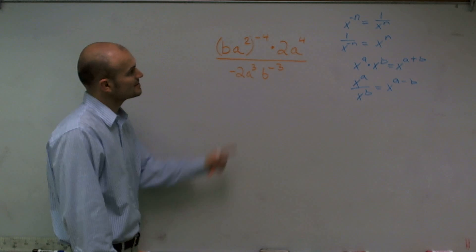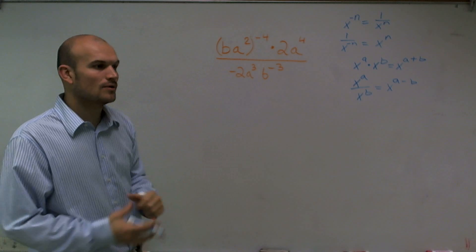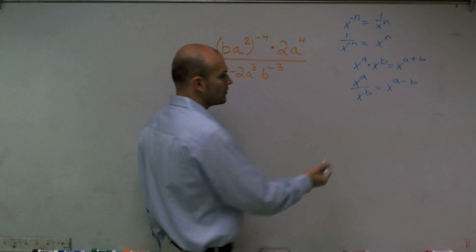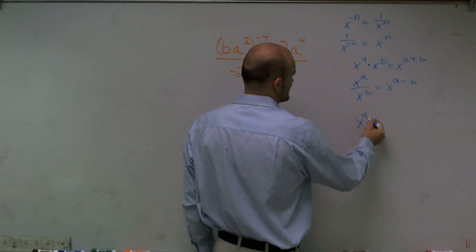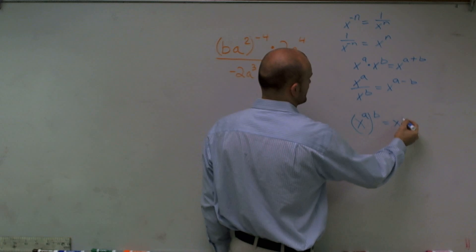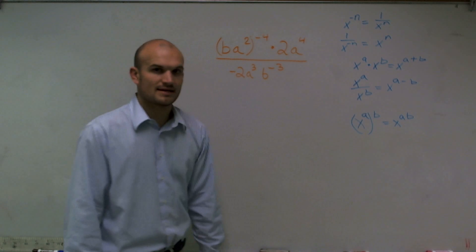And then the last thing I notice is I do have some parentheses in here. And so I have a variable or I have an exponent raised to another power. So the power rule tells us if I have x, if I have a variable x to the a raised to the b power, that's simply going to mean x to the a multiplied by b.